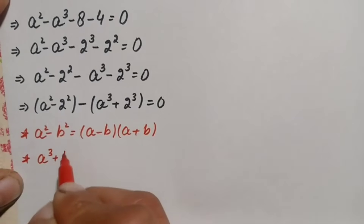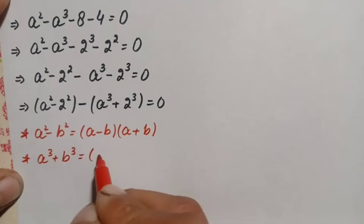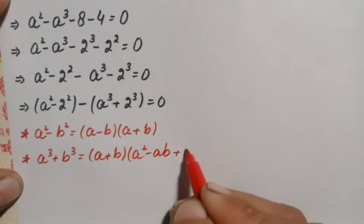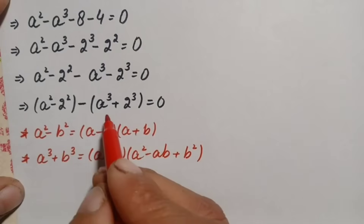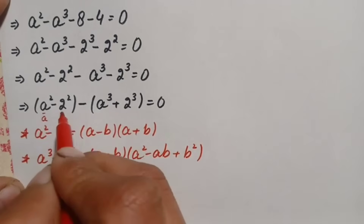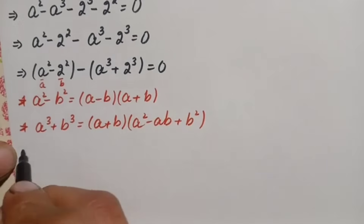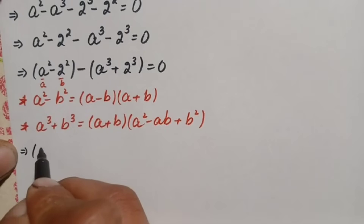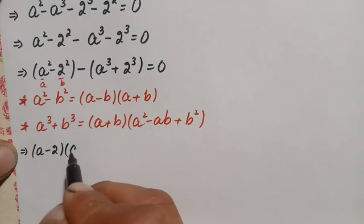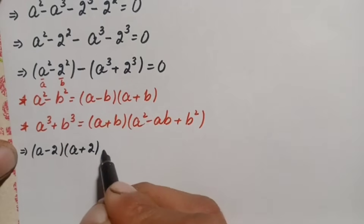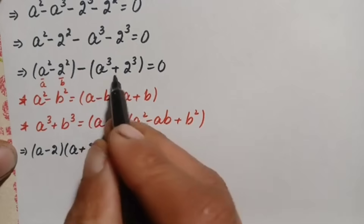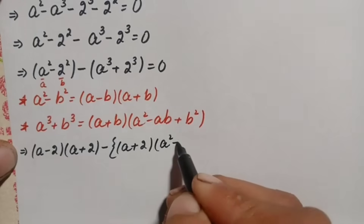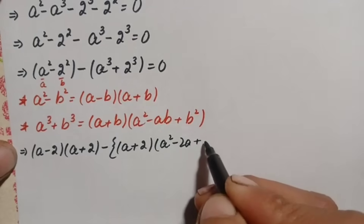The second identity is a cubed plus b cubed equals a plus b times a squared minus a times b plus b squared. Using these two identities, where a is a and b is 2, the first term becomes a minus 2 times a plus 2, and the second term becomes a plus 2 times a squared minus 2a plus 2 squared, all equal to zero.